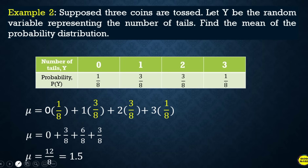Twelve over eight gives the answer 1.5. So the mean value — when we toss three coins and count the number of tails — the average value, or the mean of the possible values of the random variable number of tails, is 1.5.